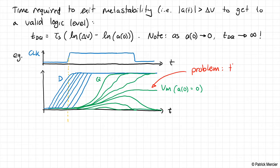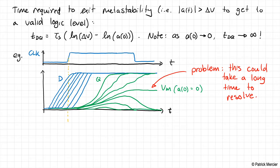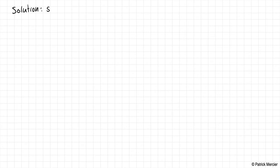The problem is this could take a long time to resolve. This is what we want to address when we design a circuit to help us with this. Entering metastability can be very problematic — we definitely don't want this invalid logic level to propagate through our circuits. The solution is what we call a synchronizer.